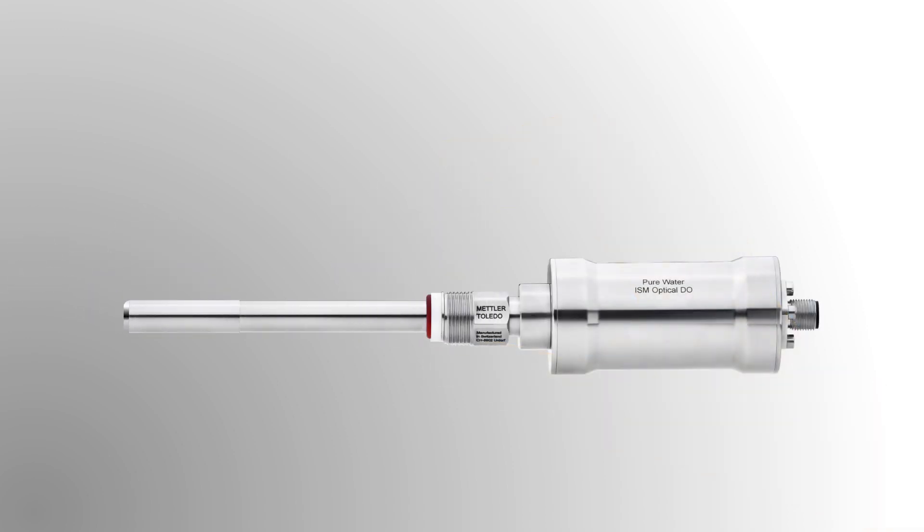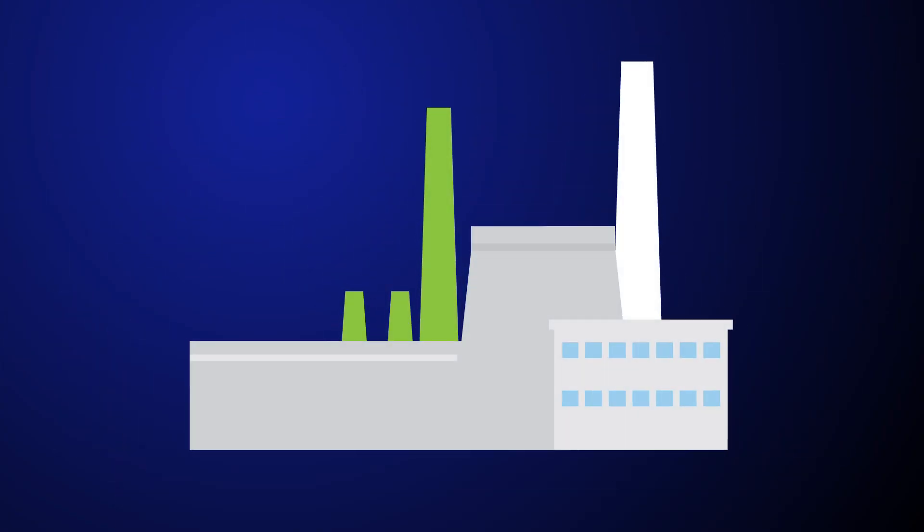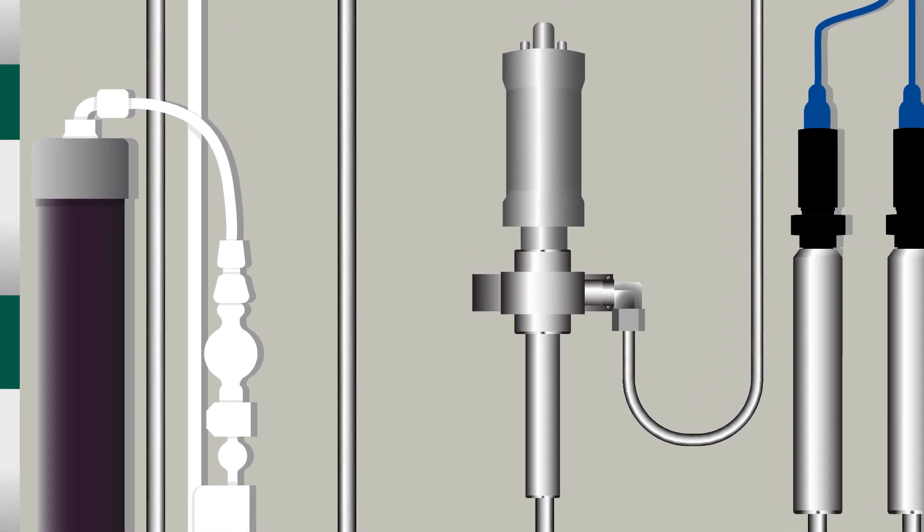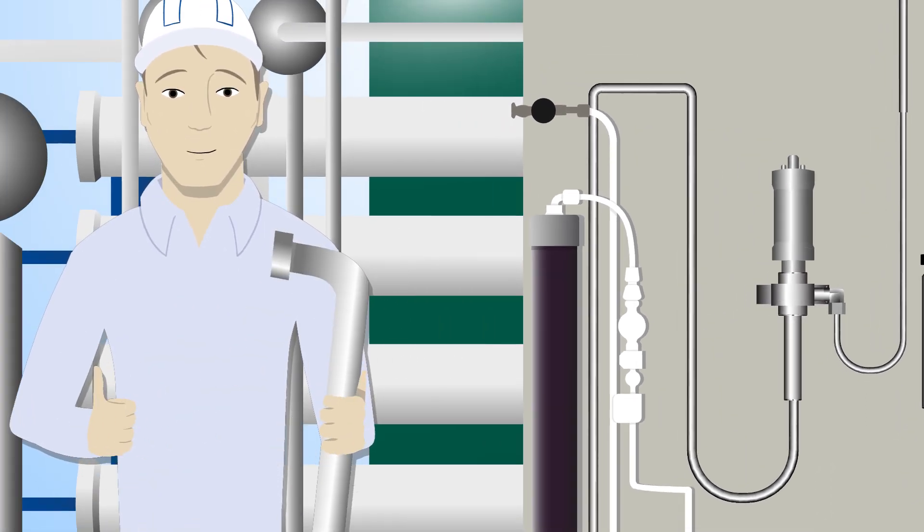This provides plants with lower operating costs and reduced downtime. The Mettler Toledo Thornton Pure Water Optical DO sensor provides a fast, accurate, and low-maintenance method of measuring dissolved oxygen concentration in power plant pure water systems.